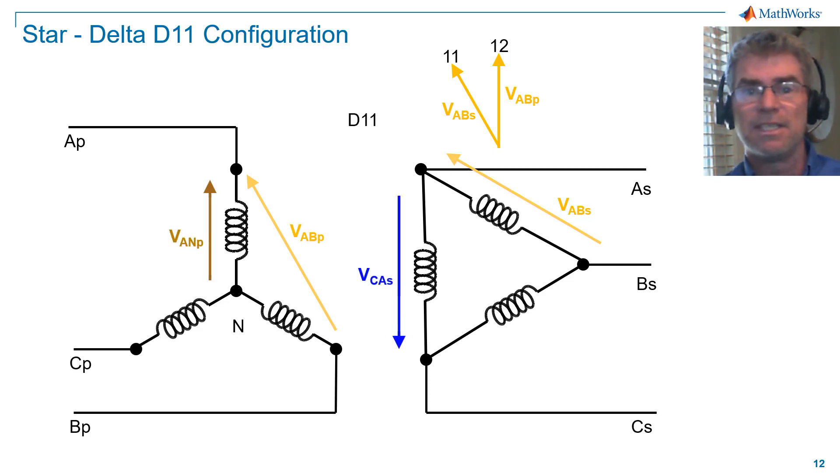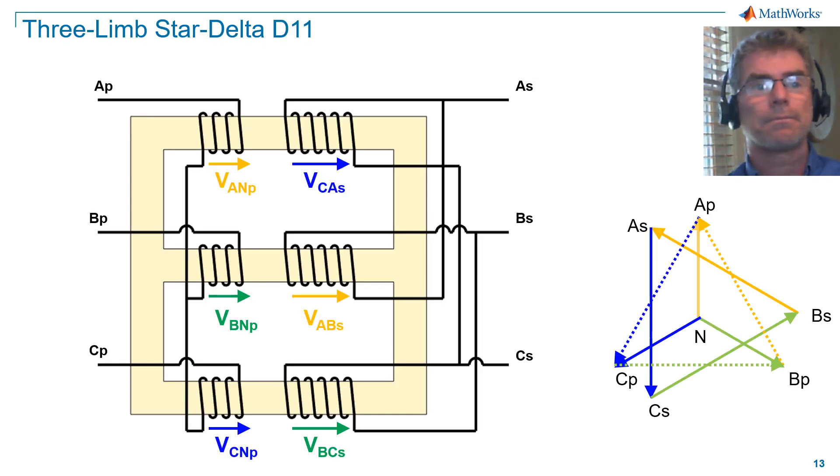Line voltage VCA on the secondary is in antiphase with phase voltage VAN on the primary. To understand this better, let's look at the winding configuration on our three-limb core diagram.